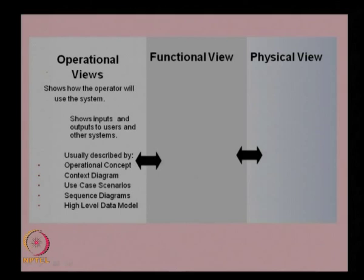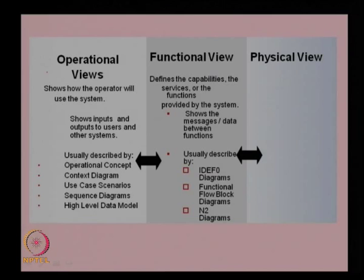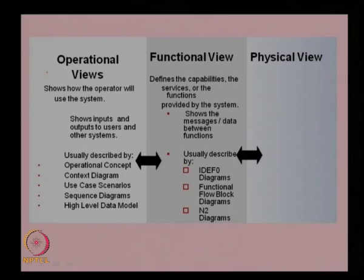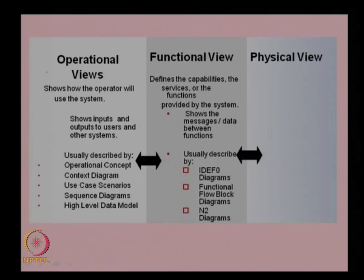The next level of view is the functional view. From the operational views we will develop a functional view of the system. We will look at the messages and data between the functions, which basically defines the capabilities, the services, or the functions provided by the system. These are described by different methods — one method is known as IDEF0 diagram, or there are functional flow block diagrams, and N2 diagrams — all used for representing the functional view of a system.